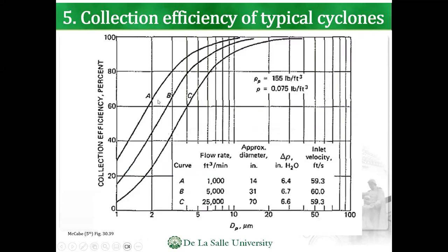These are the flow rates in cubic feet per minute and the sample inlet velocities in feet per second for different curves. You can see that as you go to the right, the diameter becomes bigger. And as the diameters become bigger, it's actually easier to achieve separation.